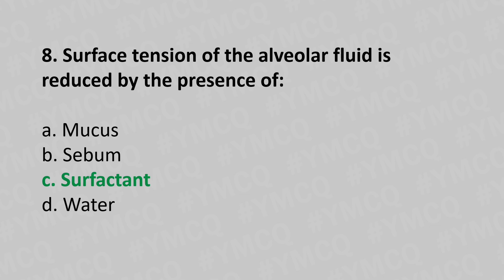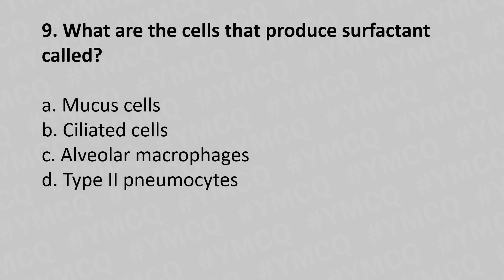Now let's move to question number nine. Which are the cells that produce surfactant? Option a, mucus cells; option b, ciliated cells; option c, alveolar macrophages; option d, type 2 pneumocytes. And the answer is option d, type 2 pneumocytes.